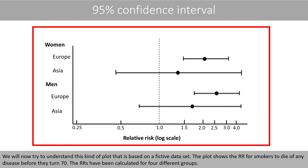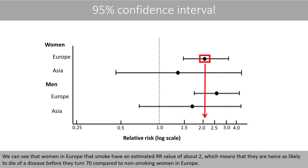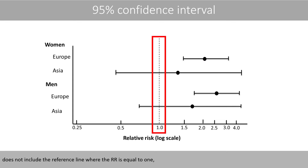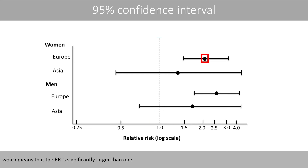We now try to understand a kind of plot that is based on a fictive dataset. The plot shows the relative risk for smokers to die of any disease before they turn 70. We can see that women in Europe who smoke have an estimated relative risk value of about 2, which means that they are twice as likely to die of a disease before they turn 70 compared to non-smoking women in Europe. We see that the 95% confidence interval does not include the reference line where the relative risk is equal to 1, which means that the relative risk is significantly larger than 1.